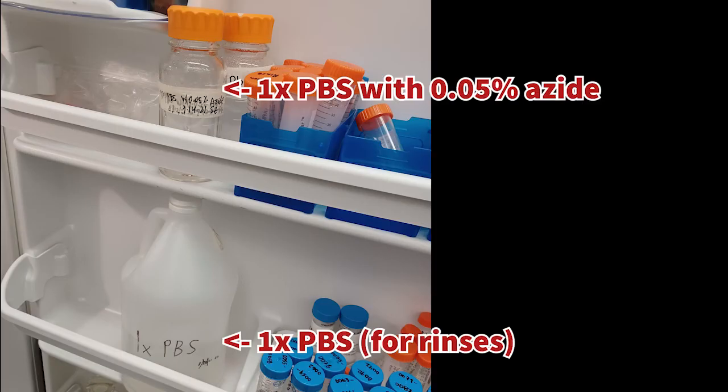Lastly, be sure to return the 1xPBS jug and the 1xPBS with 0.05% azide bottle, both back to the fridge door locations as shown here.